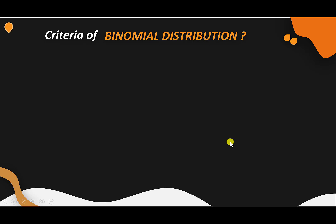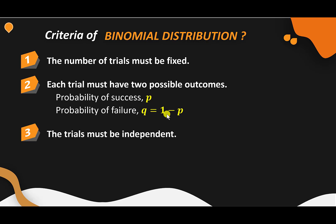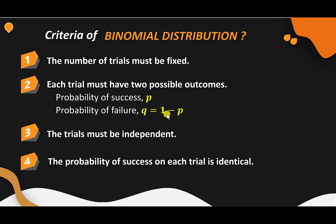The criteria of Binomial Distribution. First, the number of trials must be fixed. Second, each trial must have two possible outcomes — that is, probability of success (P) and probability of failure (Q), where Q = 1 minus P. Third, the trials must be independent, meaning each trial will not affect another trial. Fourth, the probability of success on each trial is identical.